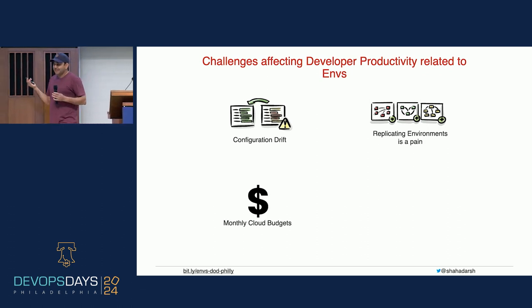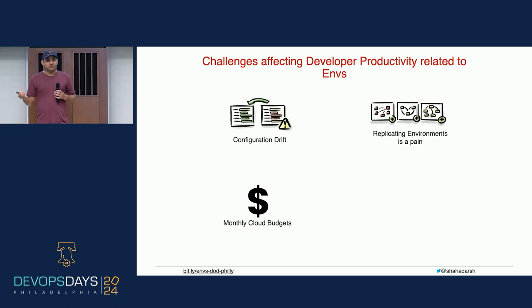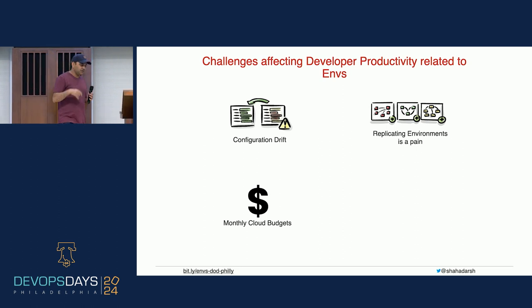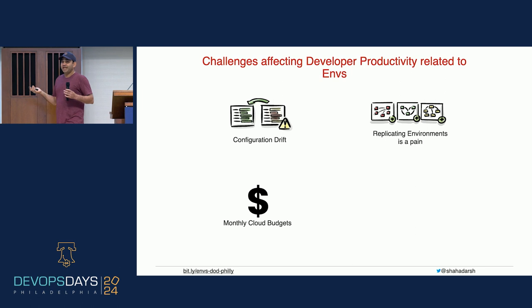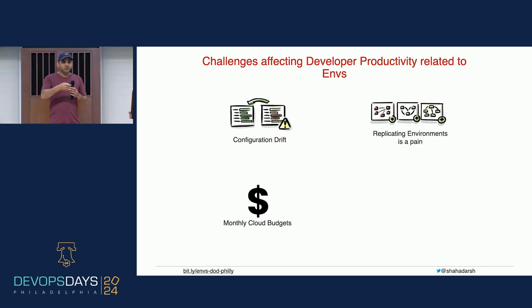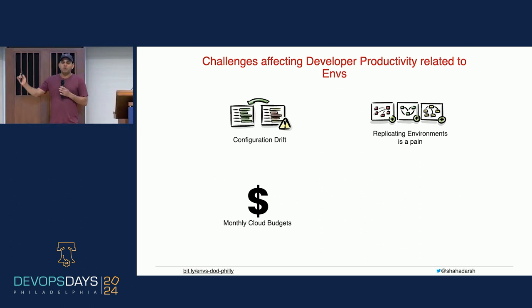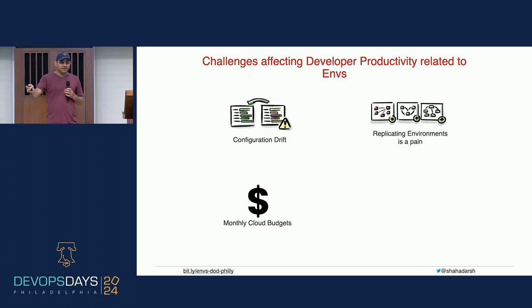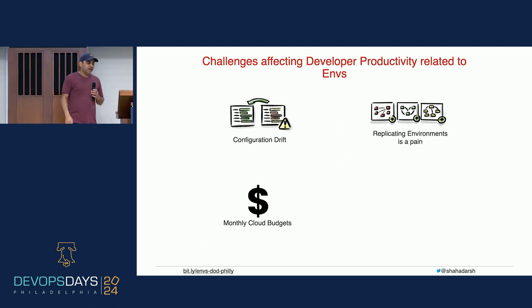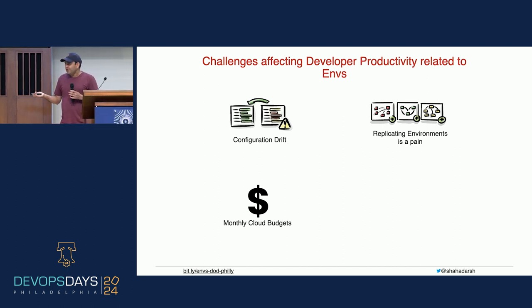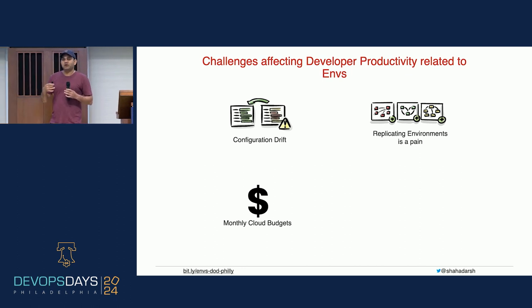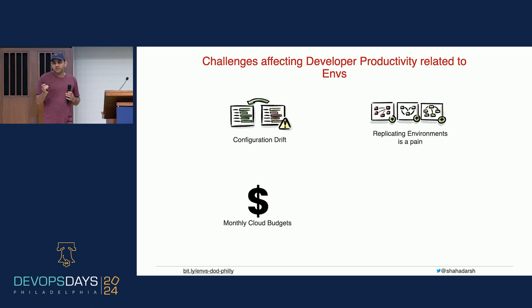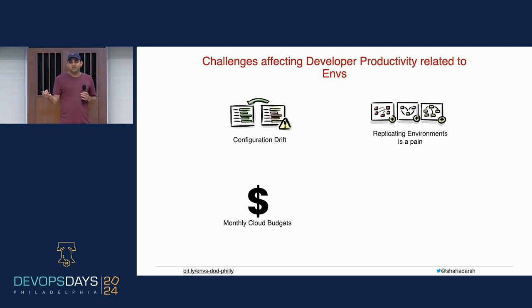Another real example: teams having monthly cloud budgets. I used to help a customer — one of the big stock exchanges — and they had monthly budgets for each team. They had to comply within that budget, and they had various buckets like experimentation or trying a new environment or a new cloud. The budget was actually approved by the finance team because their cloud bills were very high. This is a dev productivity issue because developers have to work within those constraints, and a lot of times people were waiting for approvals from the finance team, which was slowing them down.